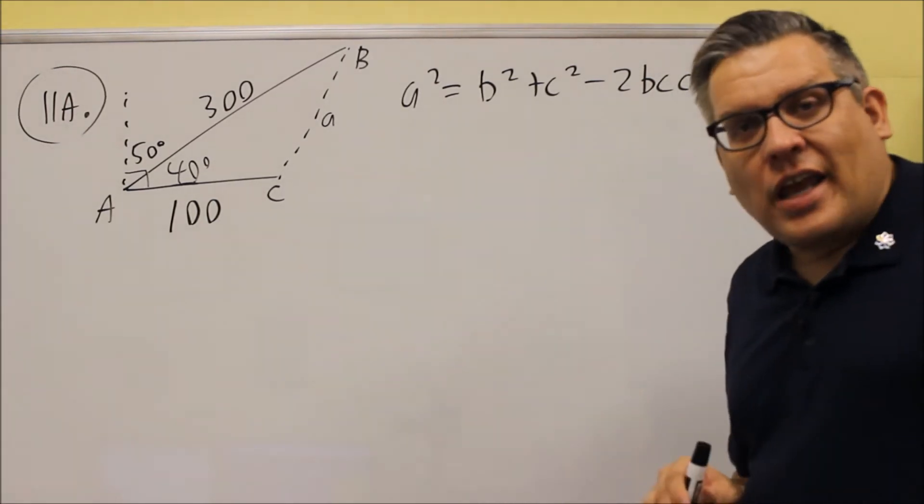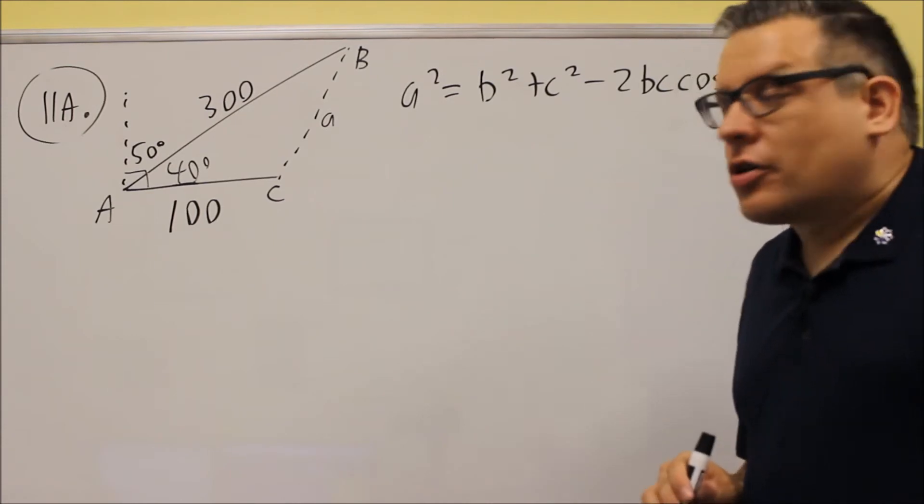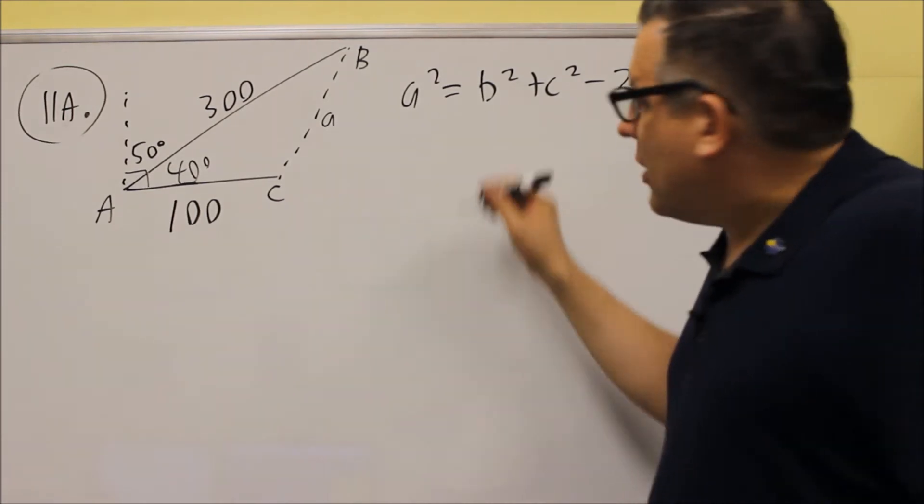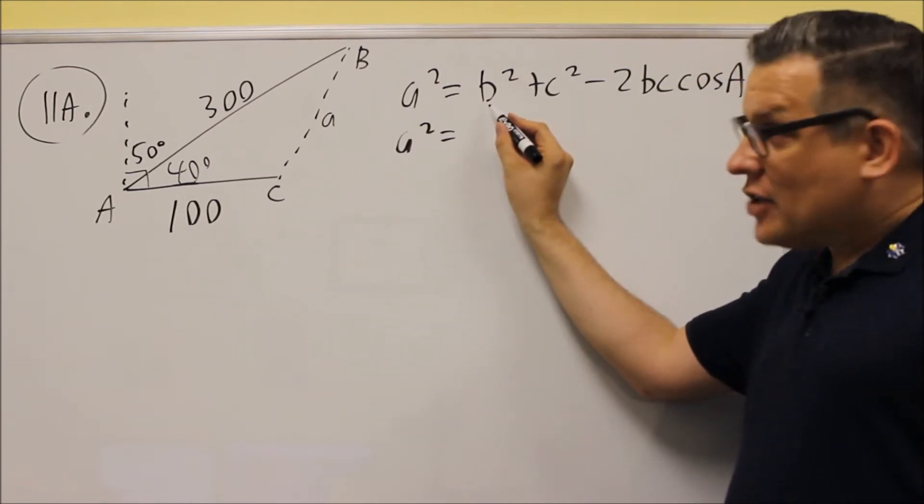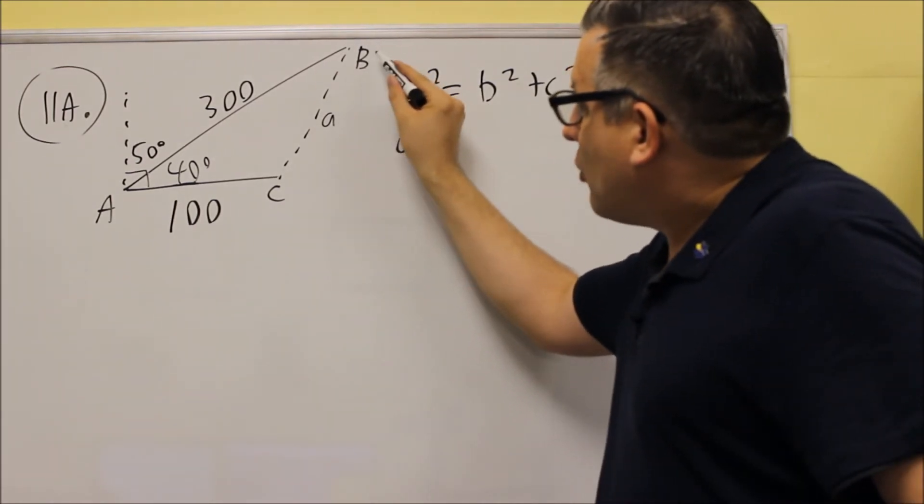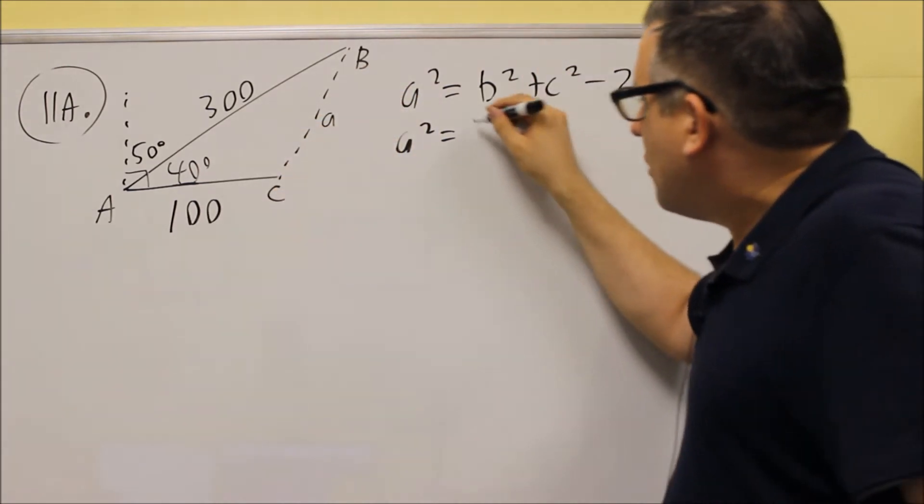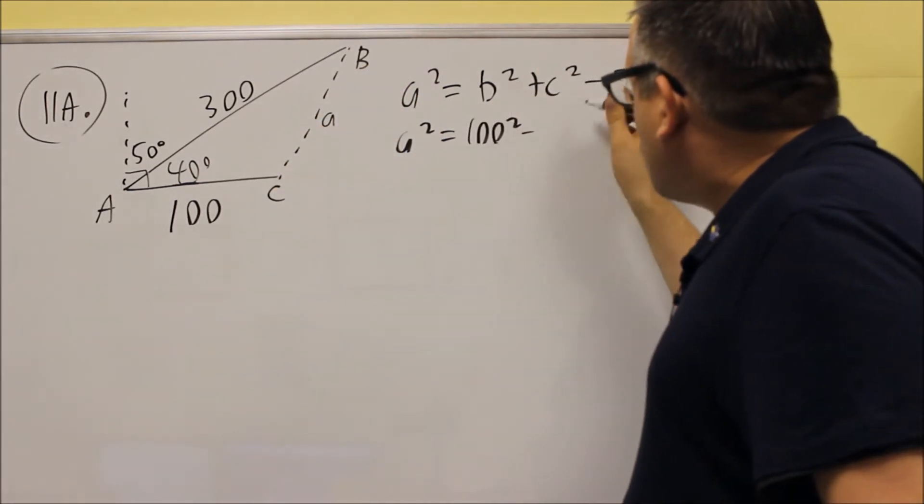And solving for this will allow us to get A, and that's the answer to this particular question. Let's put the information in that we are given. So lowercase b is opposite capital letter B, and so if you go across the triangle from there, that's going to be 100. So 100 squared.